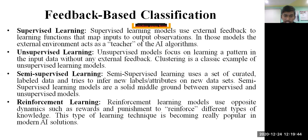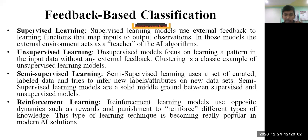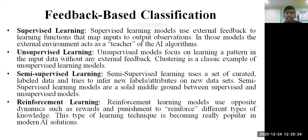Semi-supervised learning uses a set of curated labeled data and tries to infer new labels or attributes on new datasets. The knowledge given to the algorithm is only about 50 percent — only some parameters will be labeled, others not understood by the supervisor will be left over. Semi-supervised learning models are a solid middle ground between supervised and unsupervised models, where some data labels are labeled and some are not.